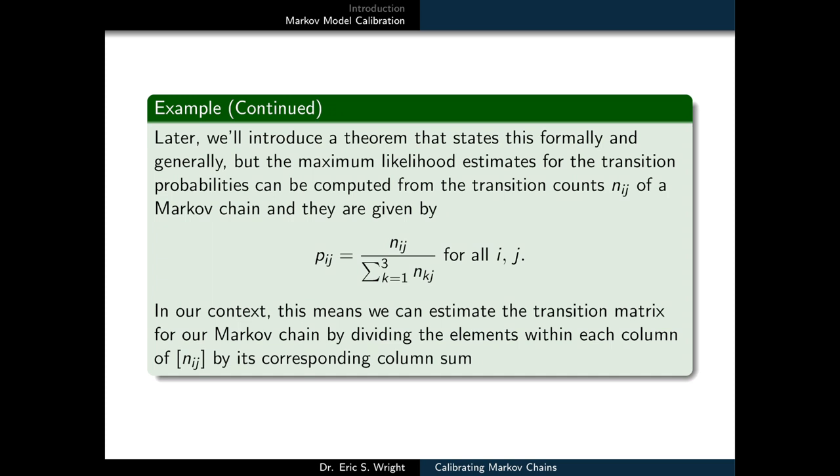Each transition probability pij, so the probability of transitioning from state j to state i, is given by the corresponding transition count nij divided by the sum of transition counts starting in state j going to all other possible states. And so in our context, this means that we can estimate the transition matrix for our Markov chain by dividing the elements within each column of nij by its corresponding column sum.